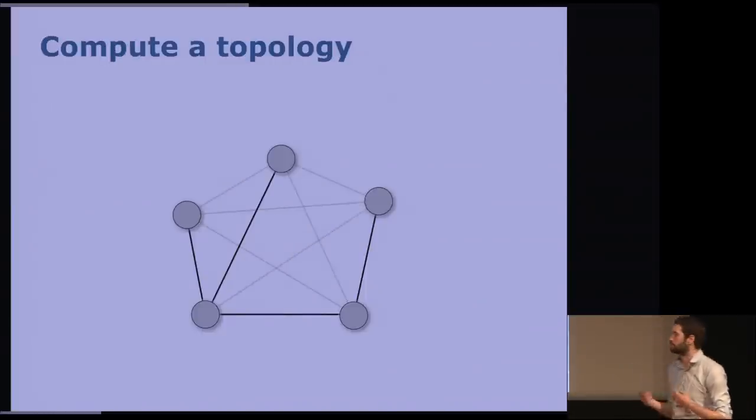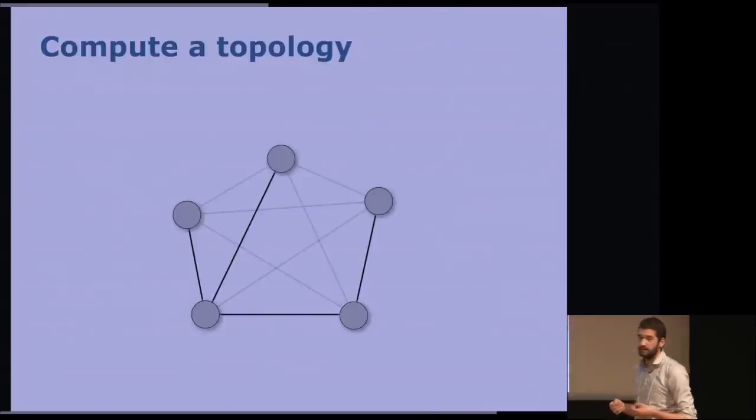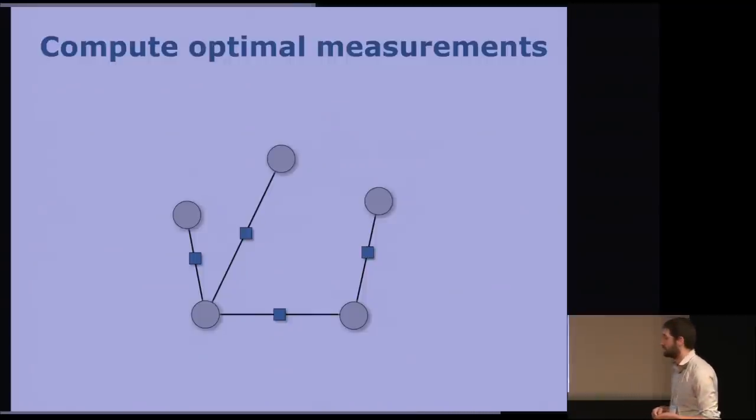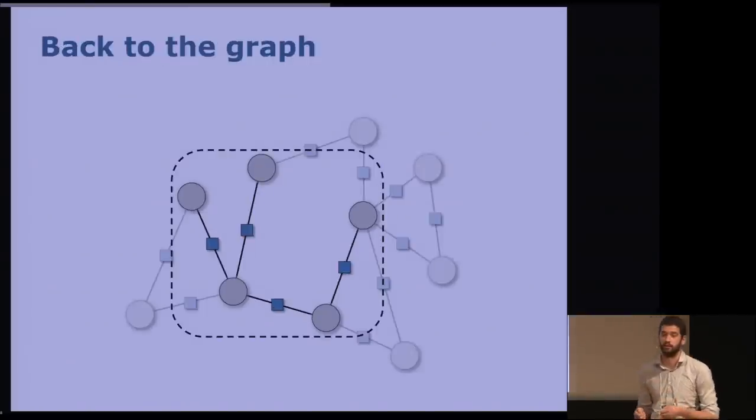And we will then choose a topology between those connections, a sparse topology, which best approximates the original distribution. This can be either done with a Chow-Liu approximation or a subgraph approximation. Given this topology and some measurement functions, which are nonlinear, we will then compute the best factors with respect to the Kullback-Leibler divergence, which means computing mean and covariance for those factors. And this is a convex optimization problem. Finally, we will take those factors we computed, put them back in the original graph instead of the factors we had attached to the XK node. And this will give us a new linearization point, which we are robust to.